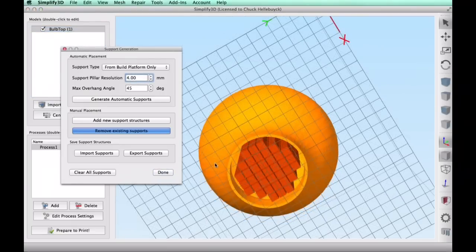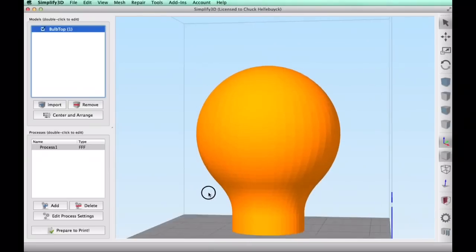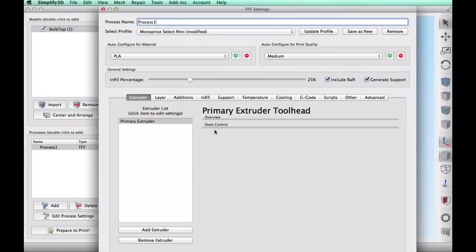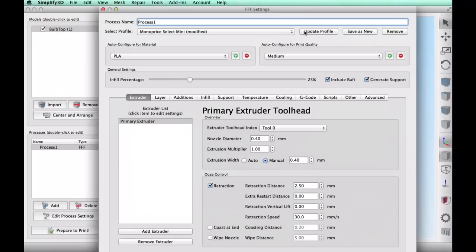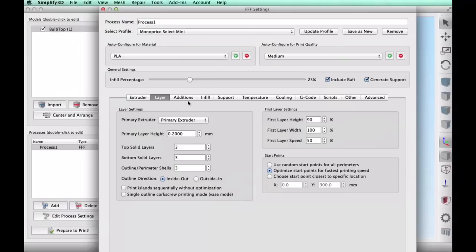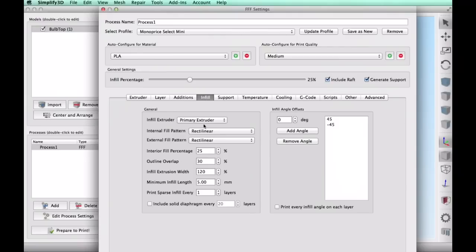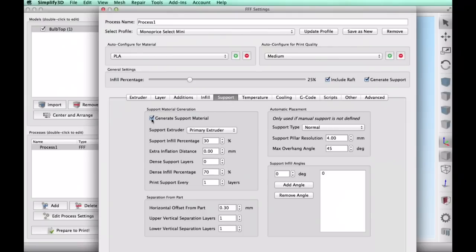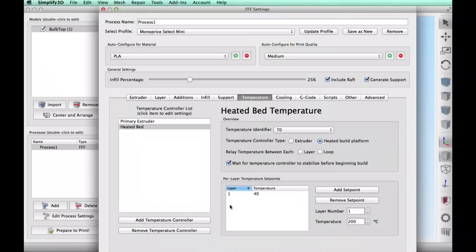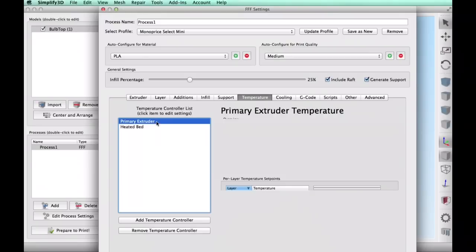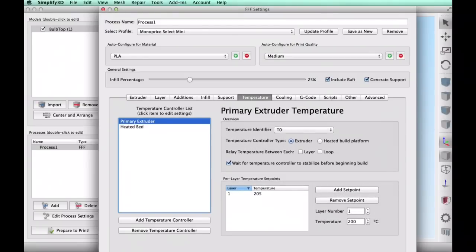So once I had that in place now I just need to go through and do the slicing settings. So I clicked on Edit Process Settings. I chose the Monoprice Select Mini profile that I have. I'm using PLA 25 percent fill. I did a layer height of 0.2. I did use a raft because I wanted that support to stick to a raft. I used an infill of 25 percent and I do have to check supports here because I'm using that. 40 degrees on the bed, 205 in the extruder. This thing was ready to slice.